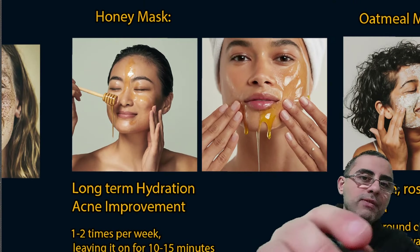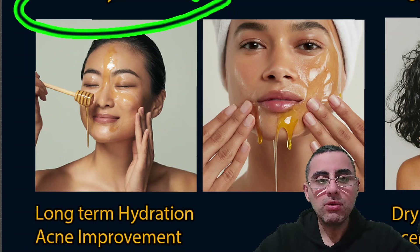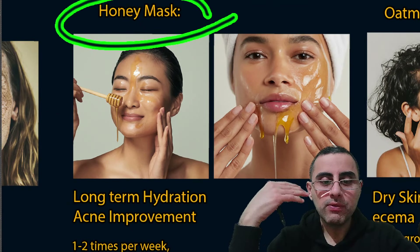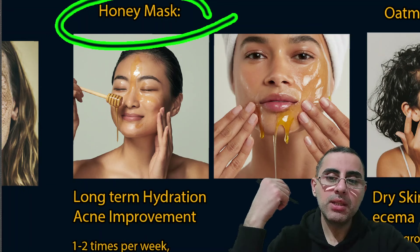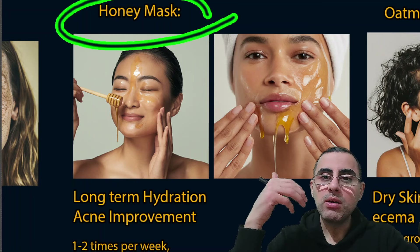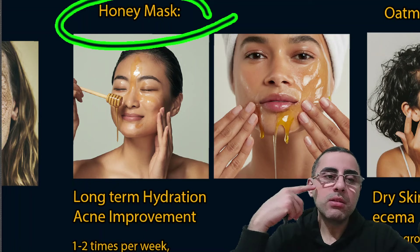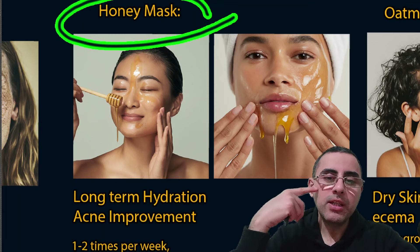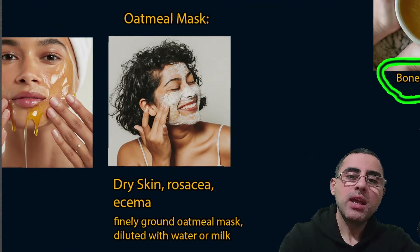For long-term effect and stronger evidence, honey mask is really effective. It provides long-term hydration and also improves acne due to its antimicrobial action. Apply honey to your face one to two times per week, leave it on for 10 to 15 minutes, then rinse with warm water. For specific problematic areas like acne or infection, you can leave honey on overnight.